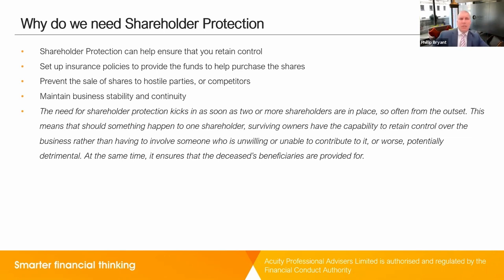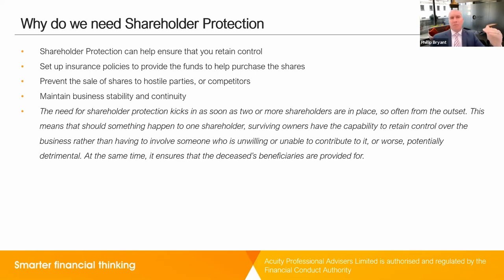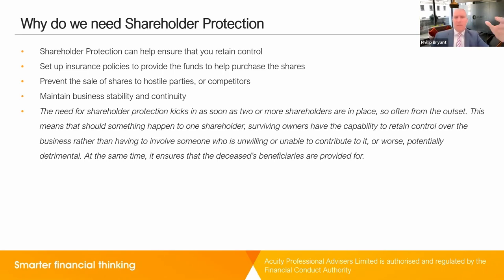Shareholder protection can also be used to insure against critical illness as well as death. This typically includes things such as heart attack and forms of cancer. If the shareholder falls ill and the right agreements have been put in place, they can then sell their shares to another shareholder and the funds are available to do that. This reduces the stress in very difficult circumstances, provides financial stability for the shareholder and their family, and most importantly, frees up time for them to hopefully recover and spend valuable time with their family and friends.